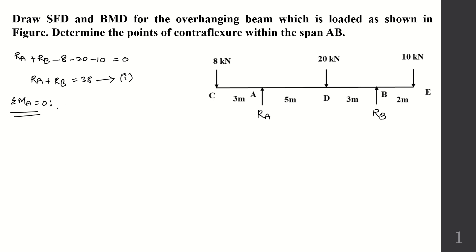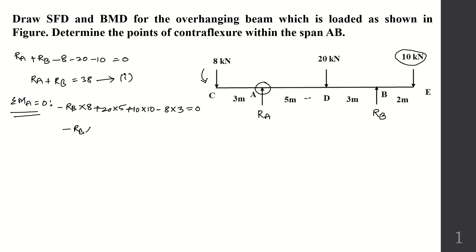Now taking the sum of moments about A and equating to zero (ΣM = 0): RB acts anticlockwise so it is −RB × 8; the 20 kN load acts clockwise so +20 × 5; the 10 kN load acts clockwise at distance 10 m so +10 × 10; and the 8 kN load acts clockwise so −8 × 3 = 0. This gives −RB × 8 = −176.